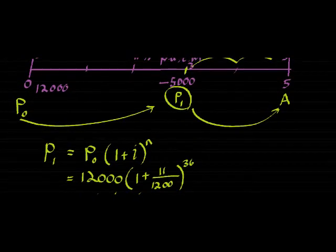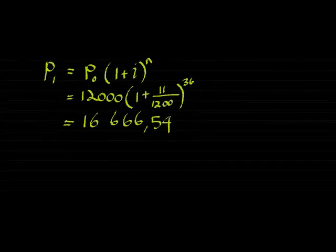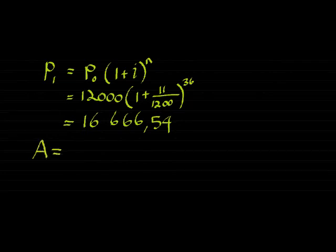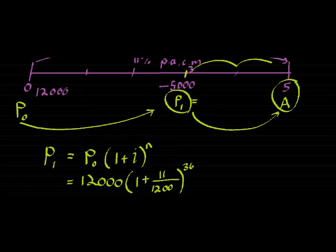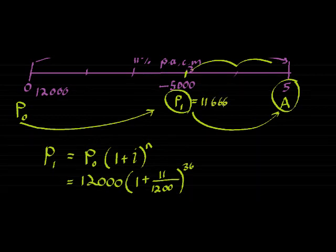Now, this is what he had in the bank account, however, it's not what was left there, so we had to subtract 5,000. So to get A, this future value, I'm only going to use what's left here, and that's 16,666.54 minus 5,000, which means it's 11,666.54. That's what's left after I've subtracted the 5,000.